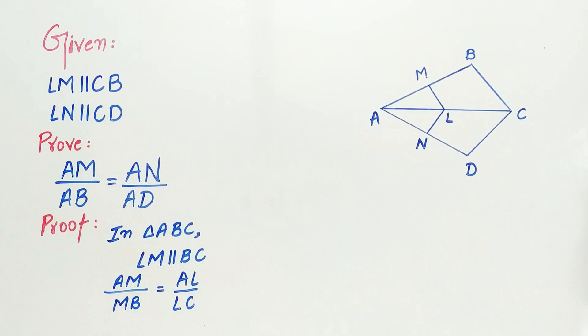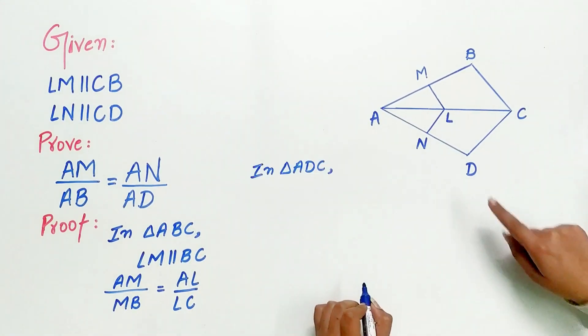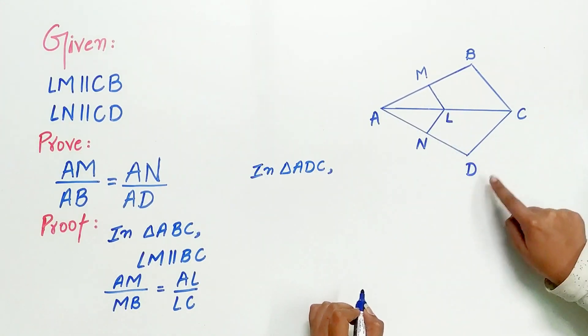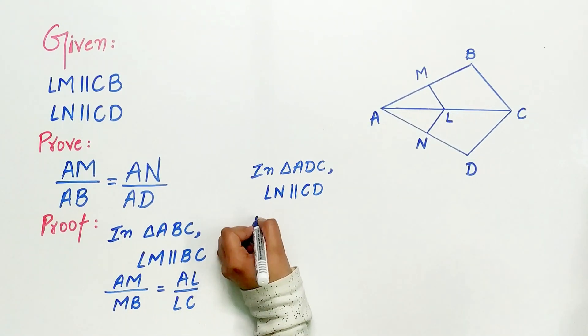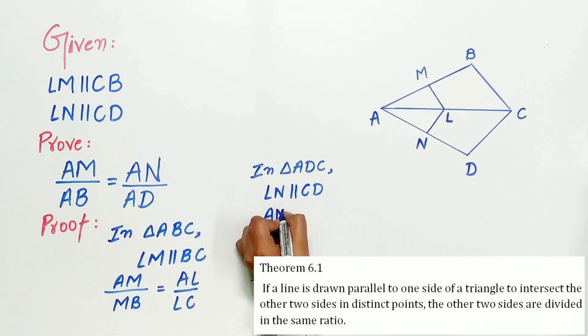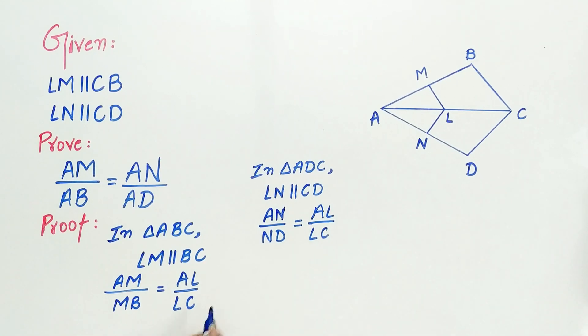Now look at the triangle ADC. LN is parallel to CD. Then, via theorem 6.1, AN by ND is equal to AL by LC. Mark it as 1 and mark it as 2.